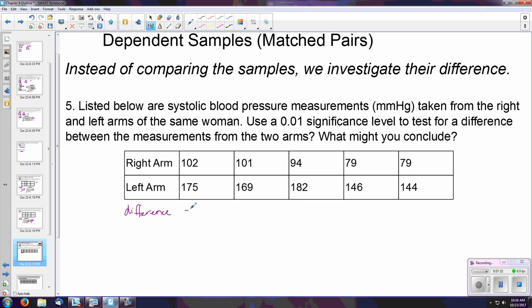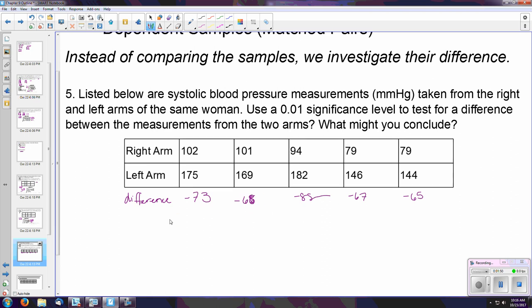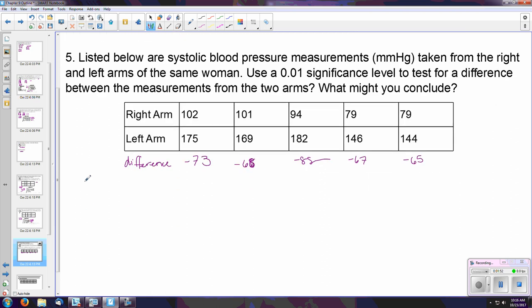Each time, the first one gives us negative 73, second negative 68, the third negative 88, negative 67, and negative 65. This is something that can be done using your graphing calculator in a very simple fashion, and I'll show that in the next example.